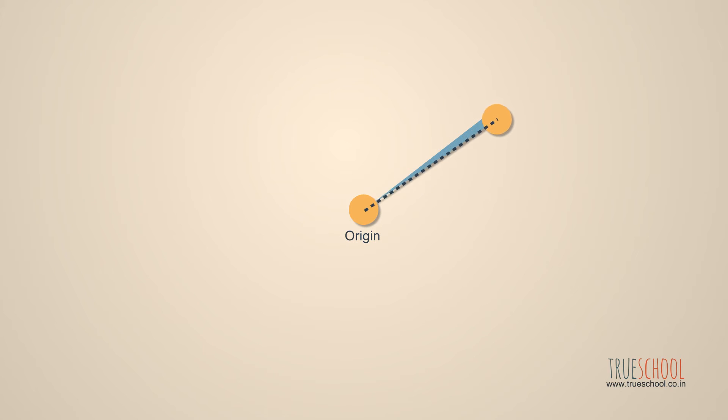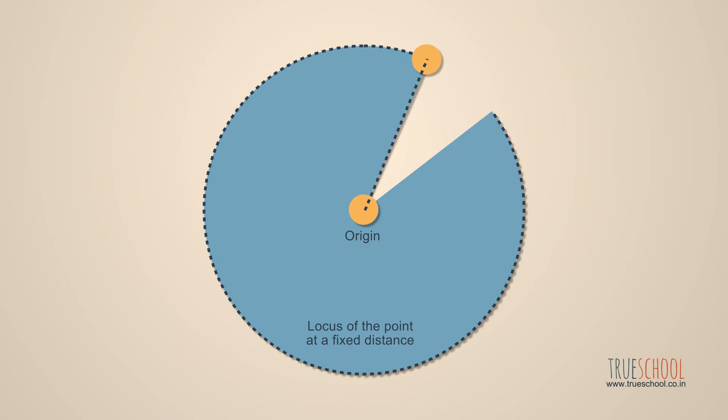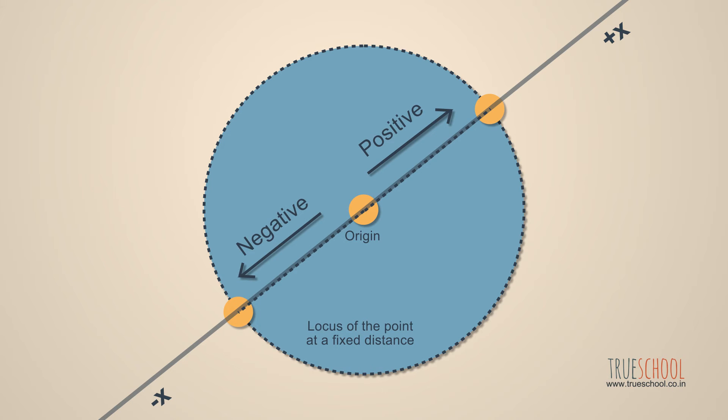Suppose I give you only the distance of a point from the origin and ask you to go there. What will you do? I will ask, in which direction? Of course. Look at these two points. They are at the same distance from the origin but they are at different positions. Hence, the direction is important. Because we are only considering one dimension, we have only two directions to worry about, which we can easily denote using positive and negative signs.